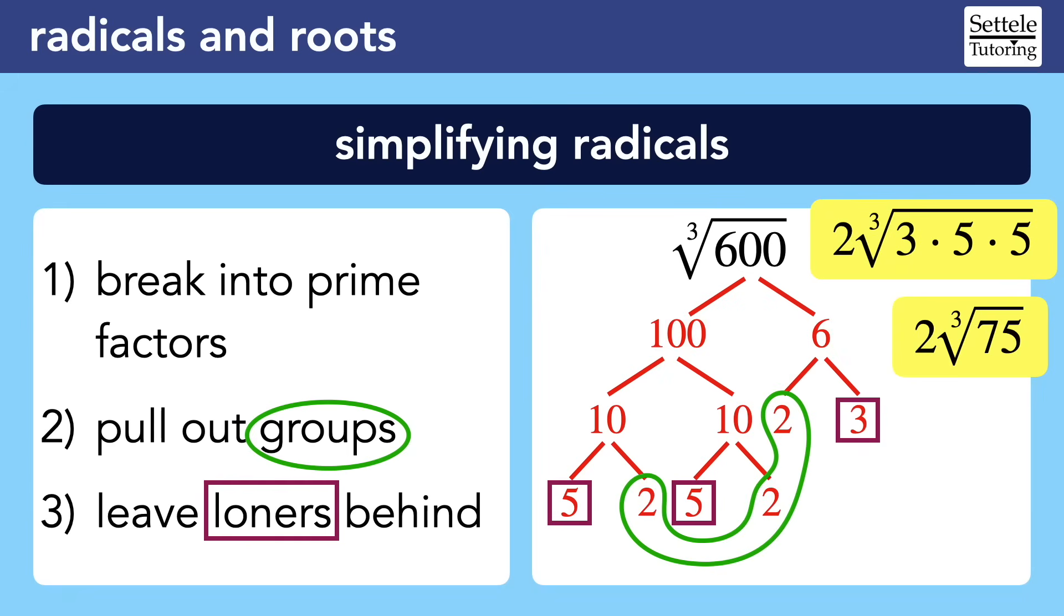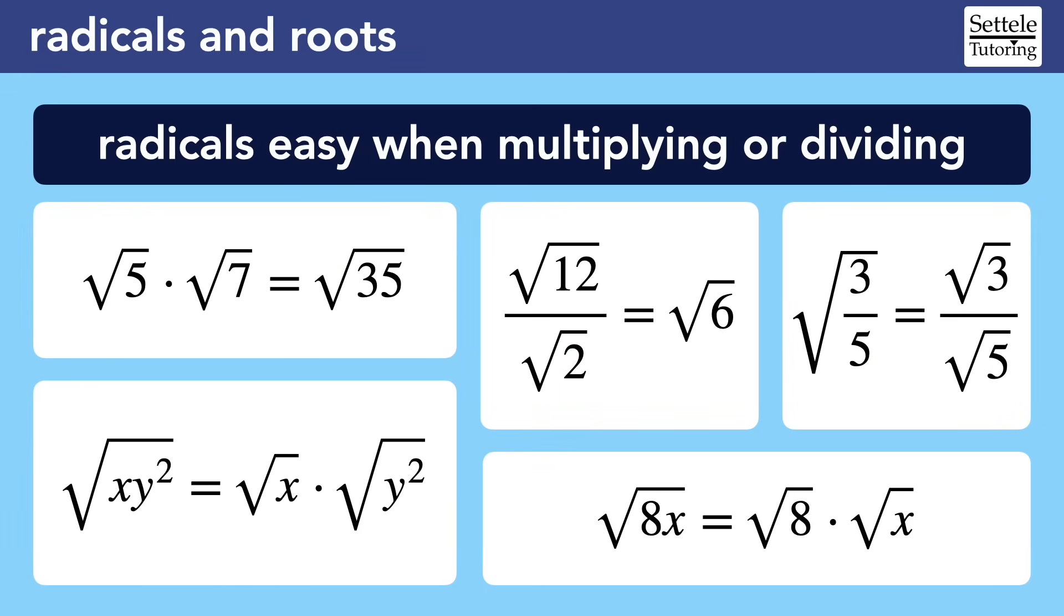On the SAT, you might not have to simplify radicals manually because you can convert any version of a radical into a decimal in the calculator, then compare the decimals to see if they are the same value. In general, the calculator will make a lot of radicals much easier to work with on the SAT, but it's not always going to be more efficient than solving manually.